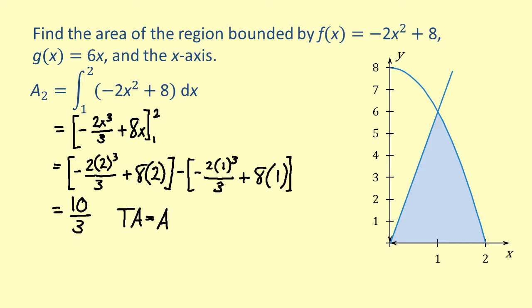The total area is the sum of A1 and A2, which is equal to 3 plus 10 over 3, which is equal to 19 over 3. Therefore, the area bounded by f of x, g of x, and the x-axis is 19 over 3.